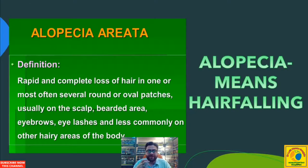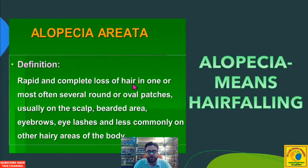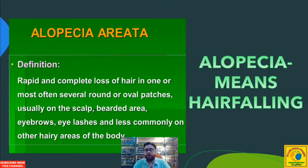For those who are not aware of the word alopecia, alopecia means general hair falling — it is the term used for generalized hair loss. Alopecia areata means rapid and complete loss of hair in one or several round or oval patches, usually on the scalp, beard area, eyelashes, and less commonly on other hairy areas of the body.